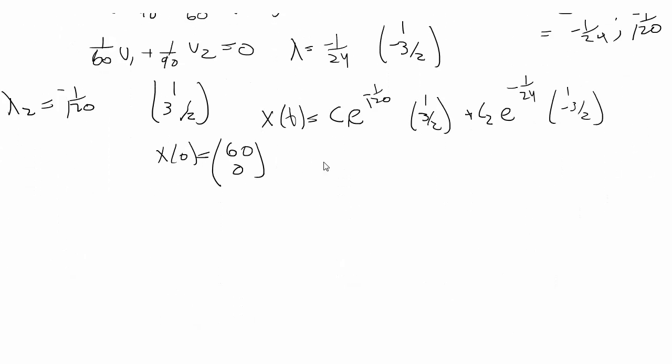So again, we plug in 0. That's going to give us c1, 3 halves c1, plus c2, negative 3 halves c2. And x of 0 is 60 and 0. So that's going to give us 60 is equal to c1 plus c2,